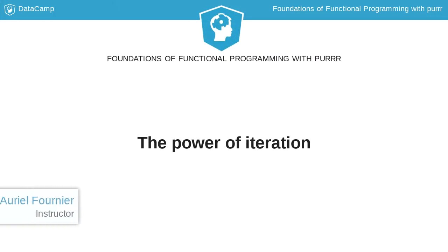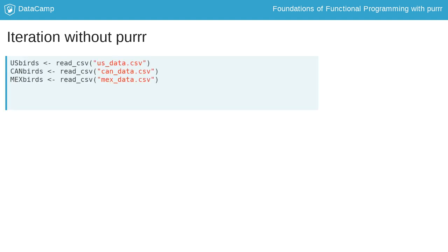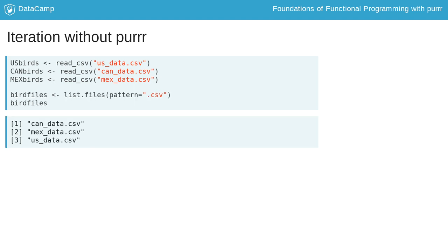Welcome to a course designed to teach you all about the purrr package. Purrr allows us to simplify iteration either with vectors or lists without having to deal with for loops. Iteration lets us do the same thing over and over again with different inputs, which means we don't have to write out repetitive lines of code for each new input. Iteration saves time, reduces lines of code, and prevents typos.